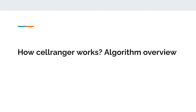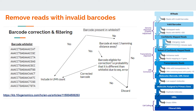Now let's talk about how Cell Ranger works — the basic algorithm overview. This is very important because any tool you use, you should know how it works so that you can fine-tune its parameters. Starting with all reads, the first step Cell Ranger does is barcode correction and filtering. Any reads associated with an invalid cell barcode will be discarded. Cell Ranger has a master list of barcodes — the barcode whitelist — and it checks whether each barcode is present in that whitelist.